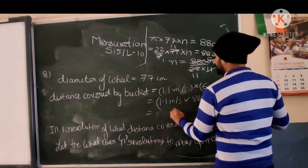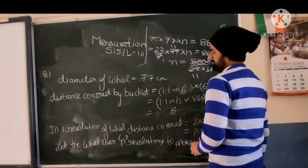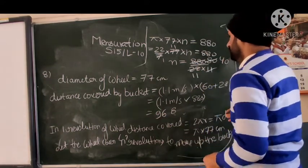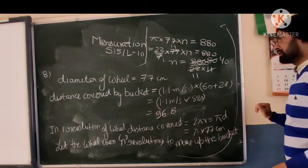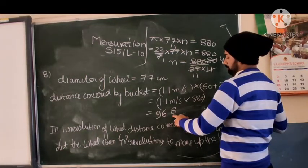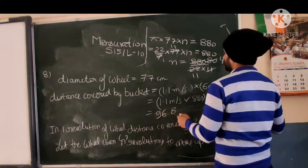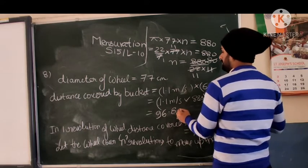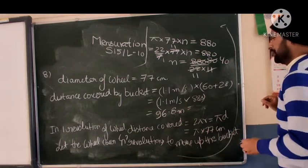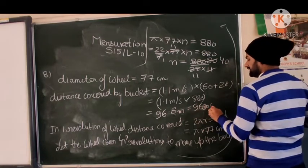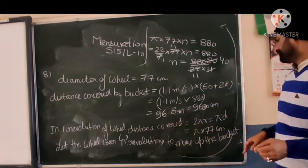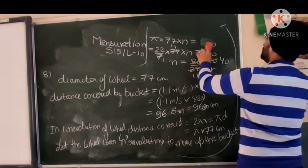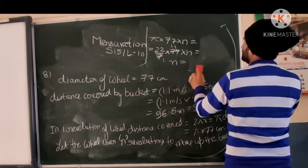So 11 into 88, 8 times 11 is 88, and it will be 96.8 meter. And if you multiply by hundred it becomes 9680 centimeter. So this is the distance covered by the bucket.